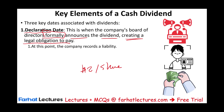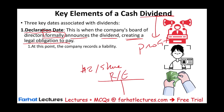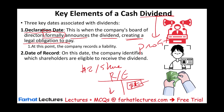Once you declare the dividend, you have a liability. When you declare it, you have to have retained earnings. Dividend is paid out of profit, and the profit for a company is parked into an account called retained earnings. So you have to have some retained earnings in order to pay it out.